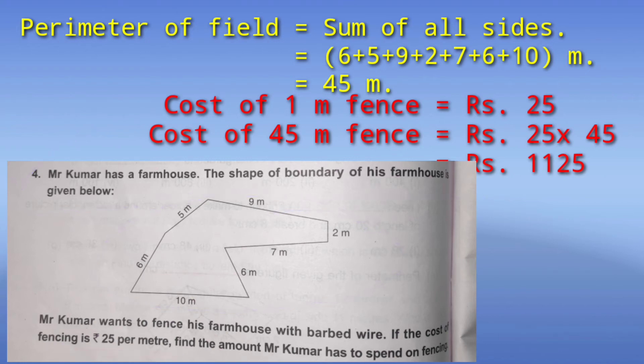So the total cost of fencing = 45 × 25. 1 meter costs 25 rupees, and we need to fence 45 meters, so 45 multiplied by 25 equals 1,125 rupees. That is how much they will have to pay.